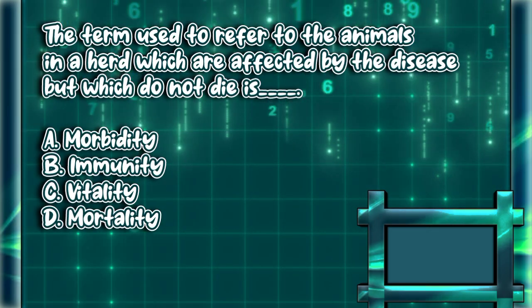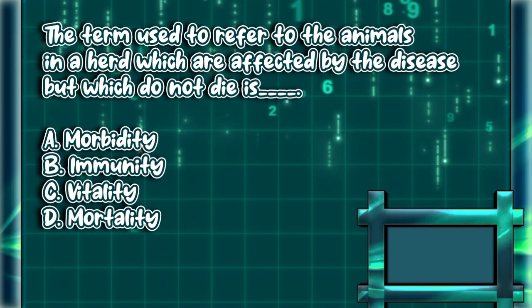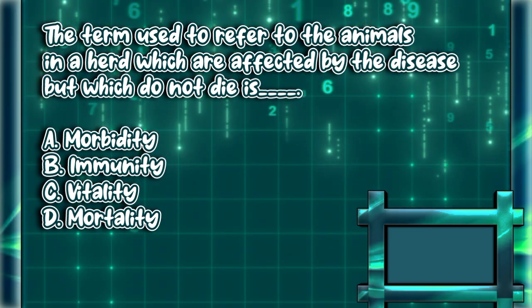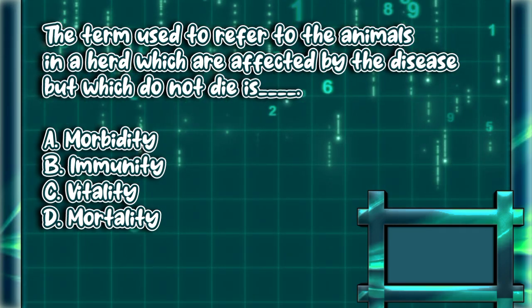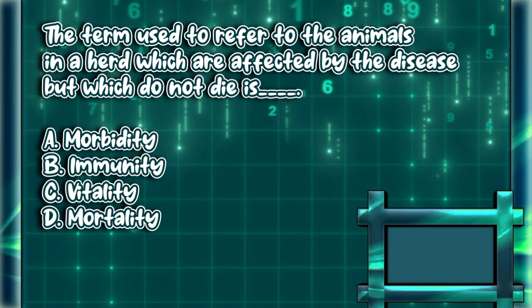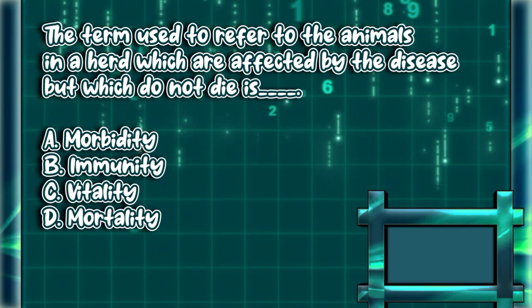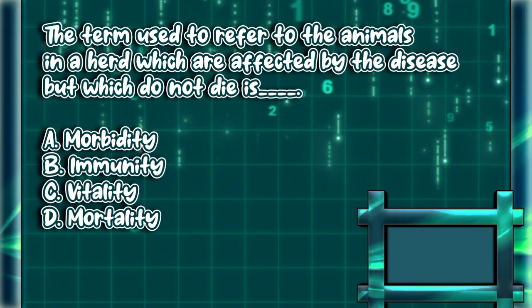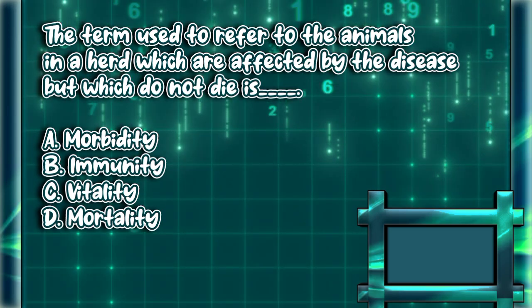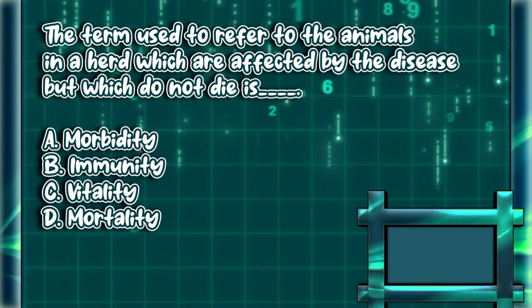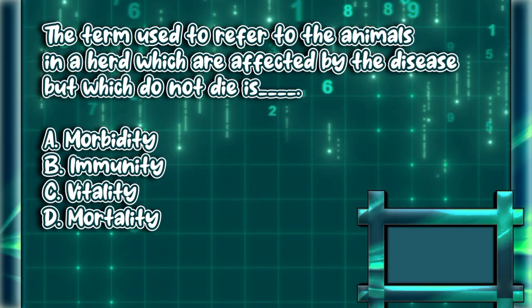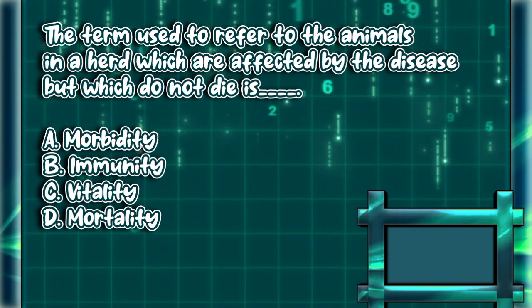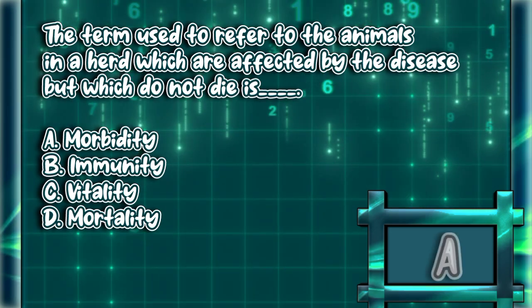The term used to refer to the animals in a herd which are affected by the disease but which do not die is. A. Morbidity. B. Immunity. C. Vitality. D. Mortality. The answer is letter A.